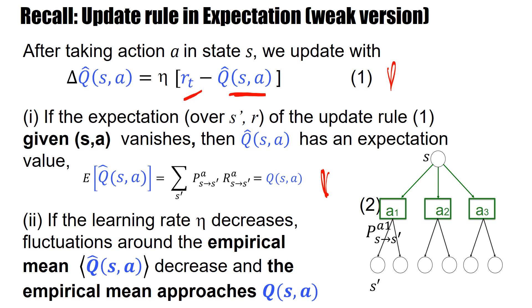If the fluctuation rate eta decreases becomes very small then fluctuations around the empirical mean the temporal mean Q hat as a decrease and the empirical mean approaches Q as a. So this is what we had.